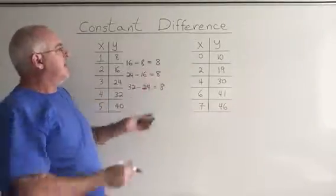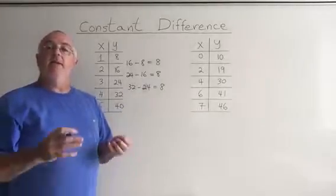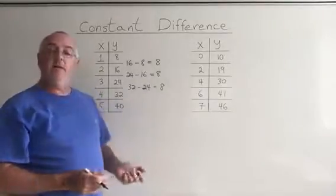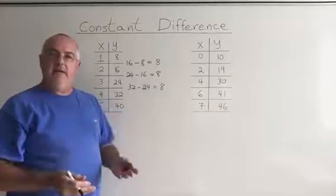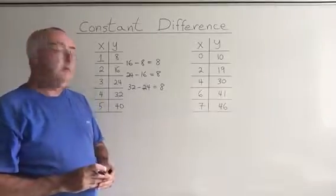But some tables of values will be derived from experimental data and experimental data isn't necessarily perfect. It's not going to give you a perfect constant difference but it could be close enough so that you're still able to say I think this is a linear relationship and then find a straight line equation that goes with it.